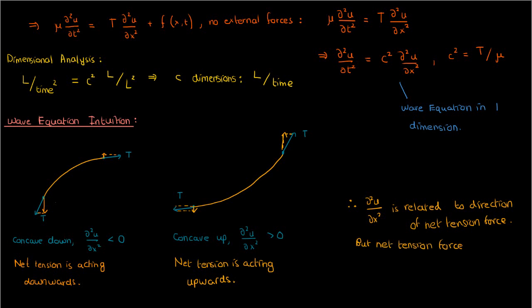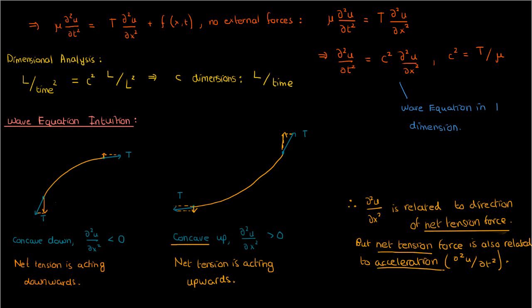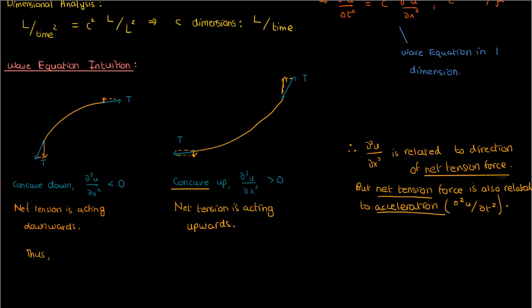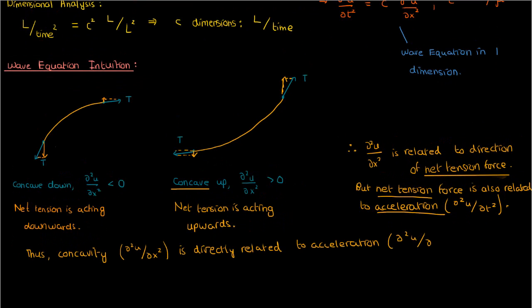Now, the net tension force is also related to the overall acceleration of the string, because by Newton's second law, net force equals mass times acceleration. Therefore, we can say that because concavity is directly related to net tension, as we just showed, and because net tension is directly related to acceleration, the concavity of the string is then directly related to the vertical acceleration of the string by Newton's second law.